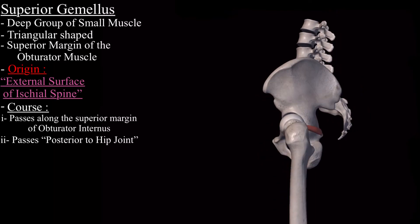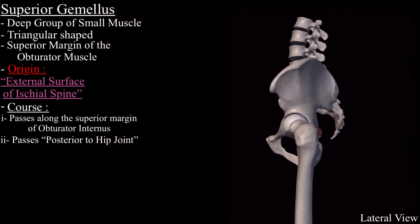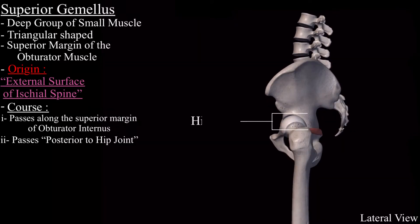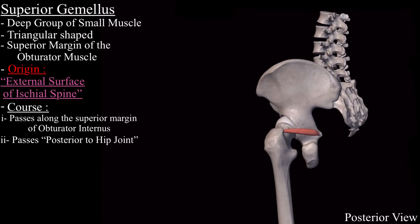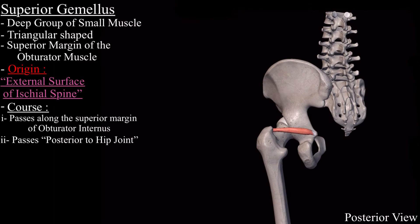In the lateral view of the skeleton, this is the hip joint. This is the anterior side of the hip joint and this is the posterior side of the hip joint, and the superior gemellus muscle is present posterior to the hip joint.